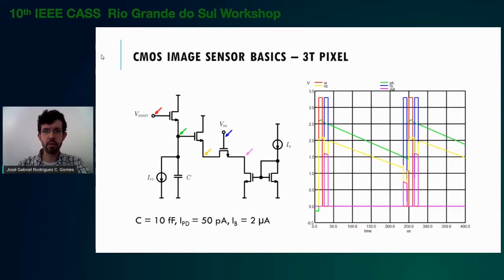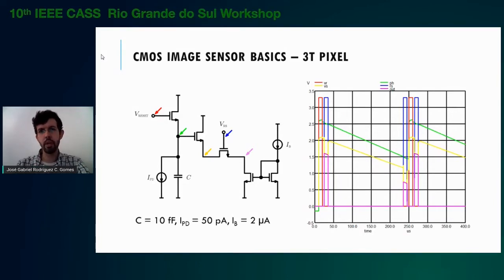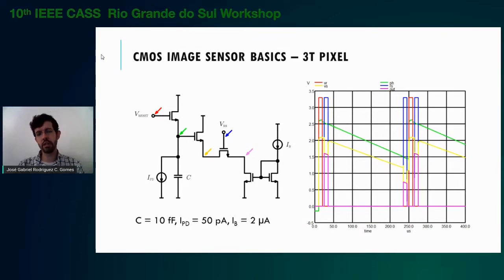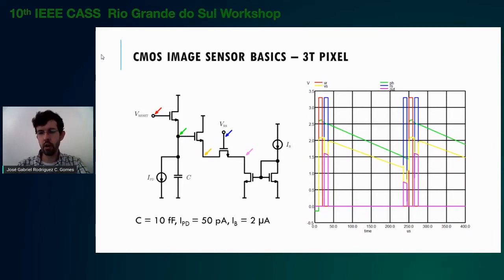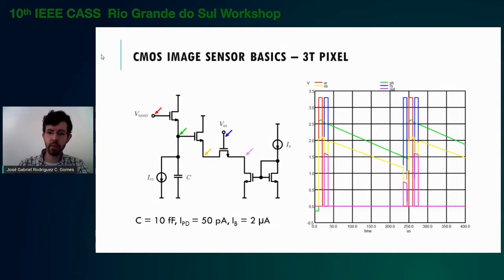The second transistor is a source-following amplifier that provides current gain, biased by a current source external to the pixel, shared by all pixels in the same column when the third transistor, the row-select transistor, is switched on. The current source and current mirror implement the external current source. The readout point is indicated in magenta. By computing the difference between two magenta samples, we get an analog estimate of the pixel luminance. The longest time interval between the two magenta samples is called the integration period.